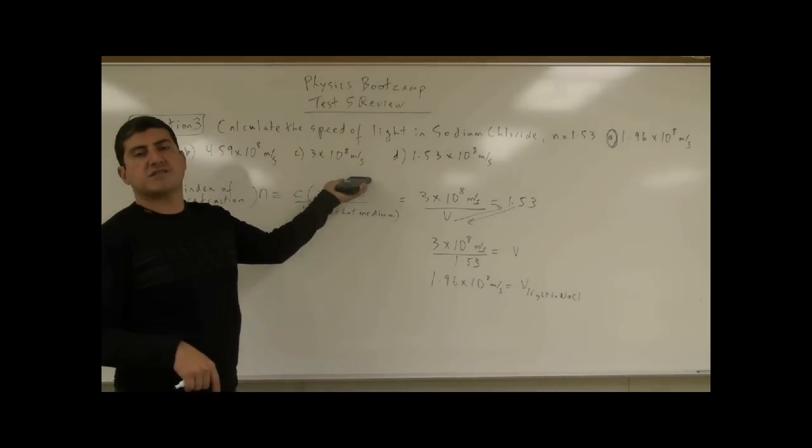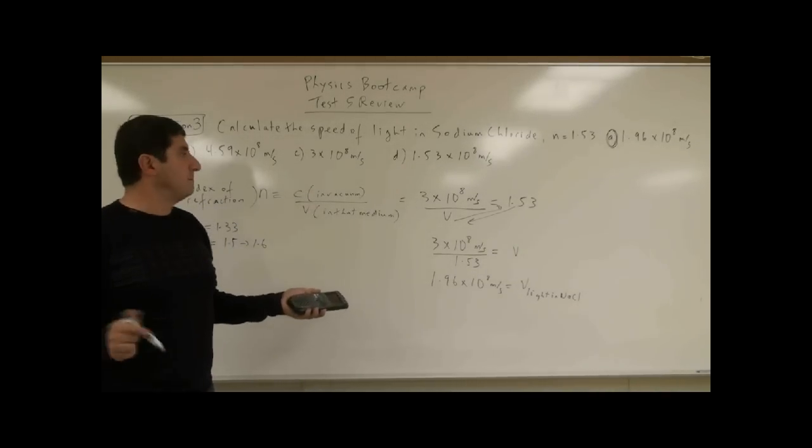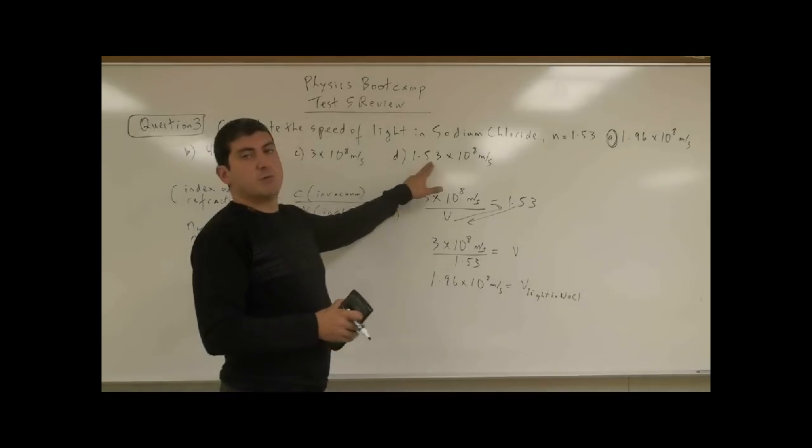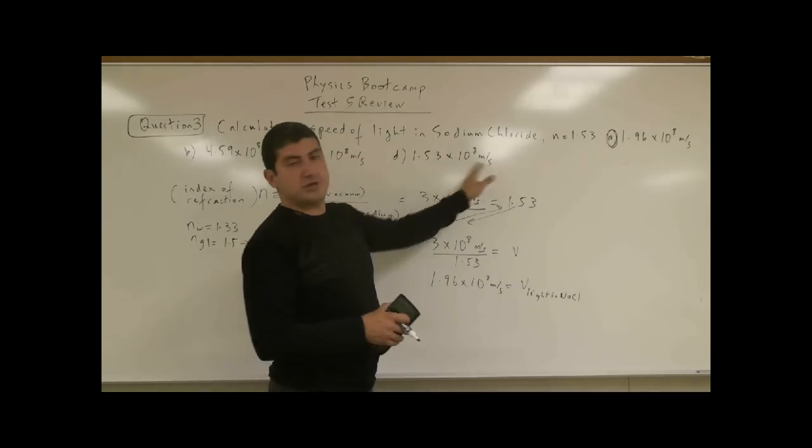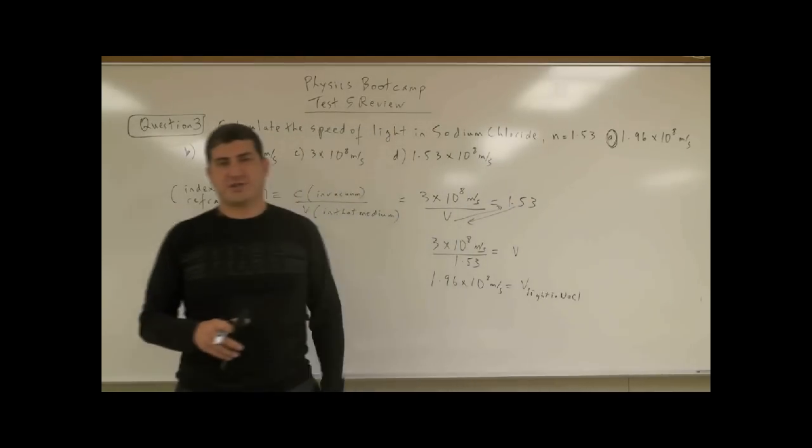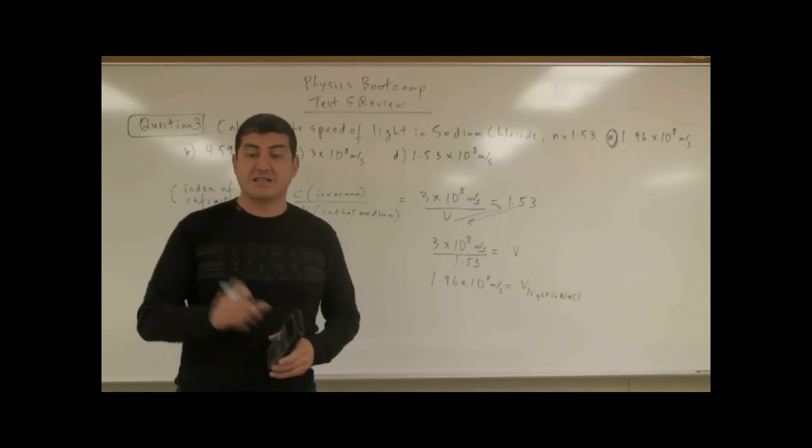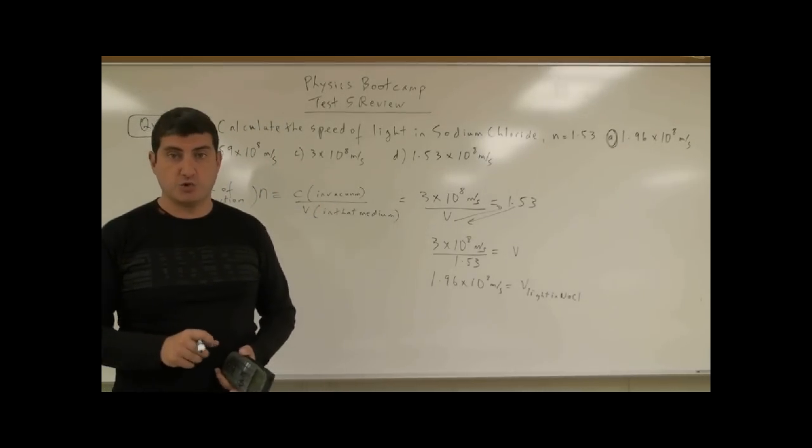The 3 times 10 to the 8 is if someone thinks that the velocity of light is not affected by any medium, and then 1.53 times 10 to the 8 is if someone thinks that they should basically just take the 1.53 and put it here and that will give them the answer. Each of those answers is put there to basically mimic a certain kind of wrong answer that someone can do.